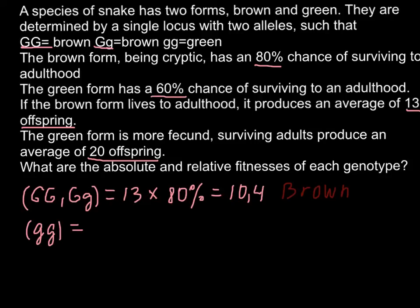So we're also using these numbers. We have to multiply 20 by the chance to survive to adulthood, that is 60%, and the number that we're going to get here would be 12.